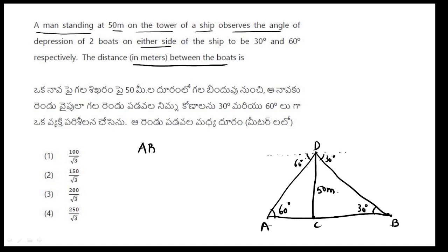Shortcut trick is, distance between the boats AB is equal to height into cot alpha plus cot beta.